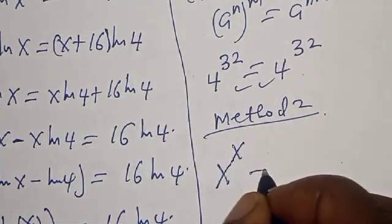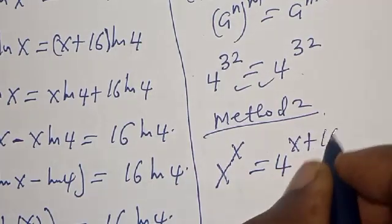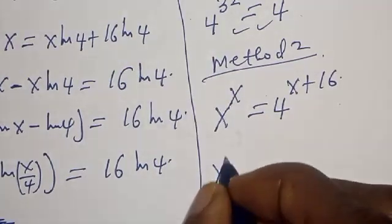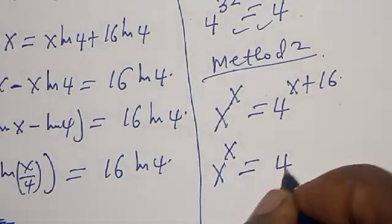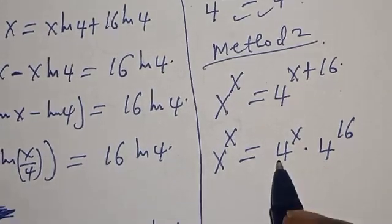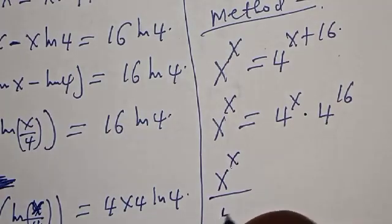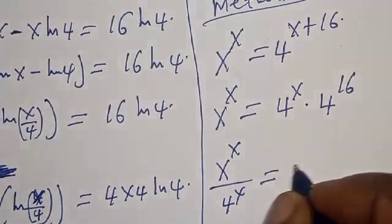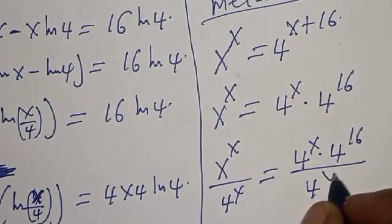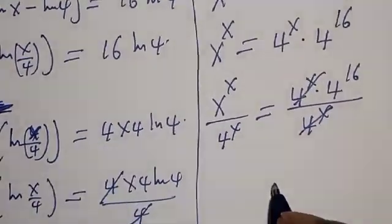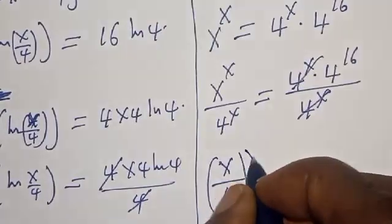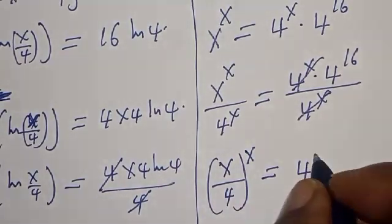We have the given equation x raised to power x is equal to 4 raised to power x plus 16. We rewrite the right side as 4 raised to power x multiplied by 4 raised to power 16. Now let's divide both sides by 4 raised to power x. We get x over 4, all raised to power x, is equal to 4 raised to power 16.